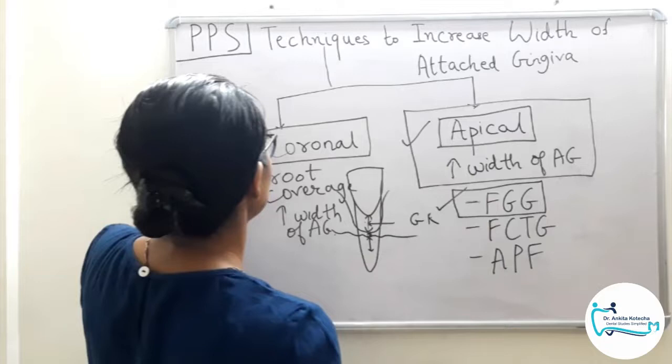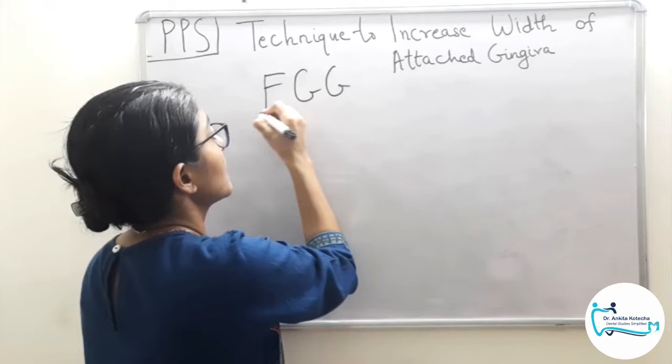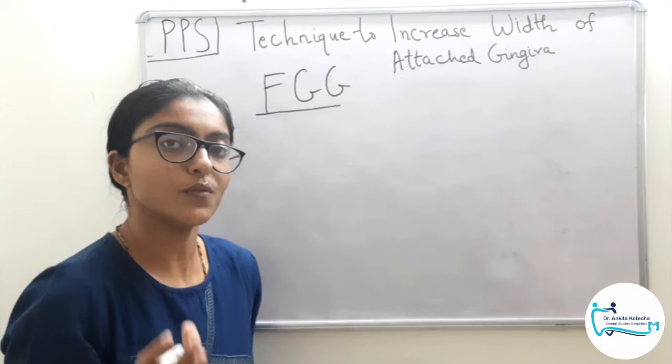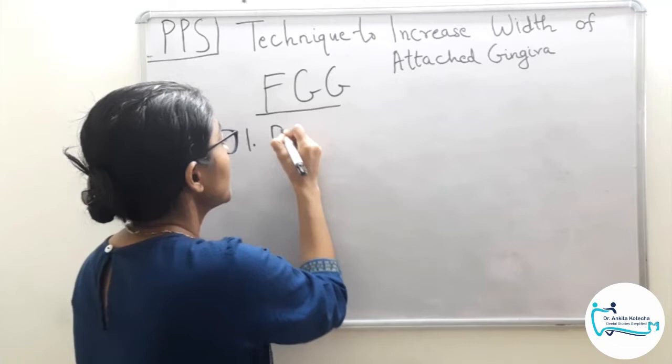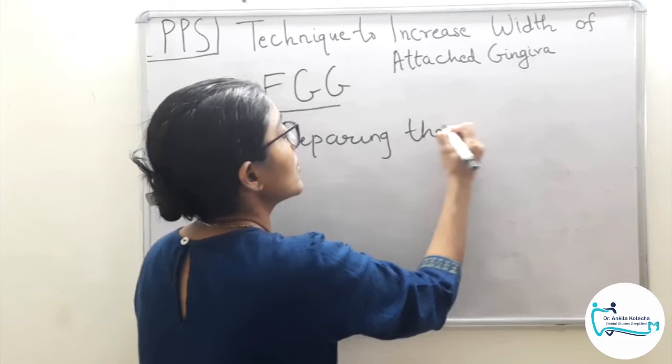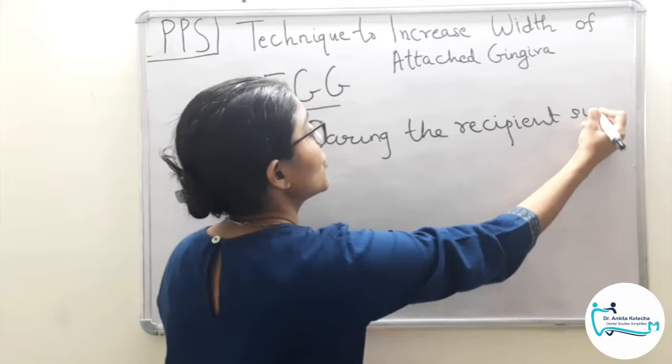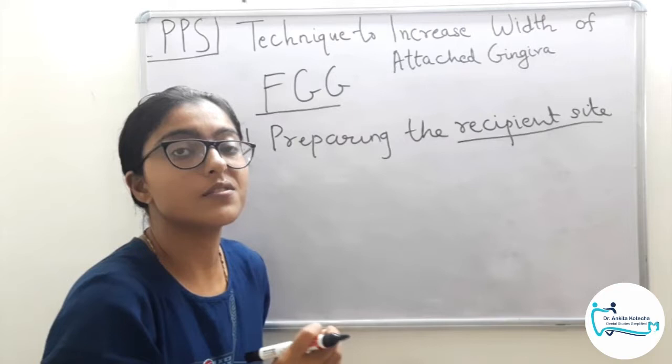In free gingival autograft, we will first discuss the outline of the entire surgical procedure followed by discussing each step in detail. Step one is preparing the recipient site — the site which is going to receive the donor graft, the free gingival graft.